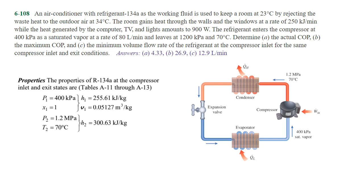Chapter 6, Problem 108. This is a rather intricate example with a lot of moving parts. We have an air conditioner with refrigerant R-134a as the working fluid used to keep a room cool at 23 degrees C by rejecting waste heat to outdoor air at 34 degrees C. The room gains heat through the walls and windows at a rate of 250 kilojoules per minute.